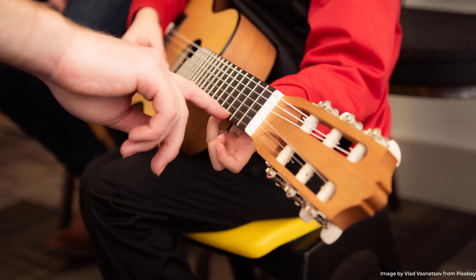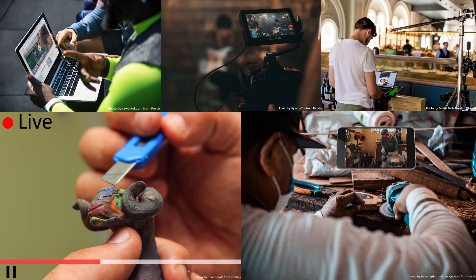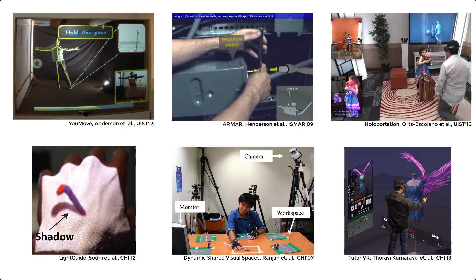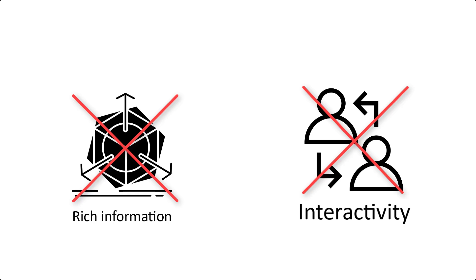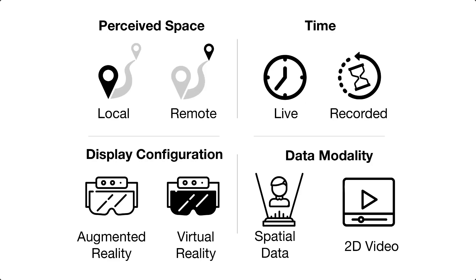While physical tasks are conventionally taught in person, remote instruction and guiding users for physical tasks has offered promise across a wide variety of domains. While it has been the subject of many prior research works, these approaches often lack rich information or interactivity between the instructor and the learner. In this work, we first introduce a design space for bi-directional mixed reality telepresence systems for teaching physical tasks.